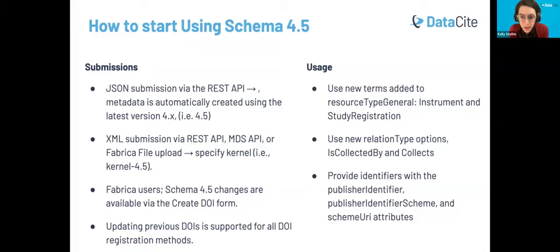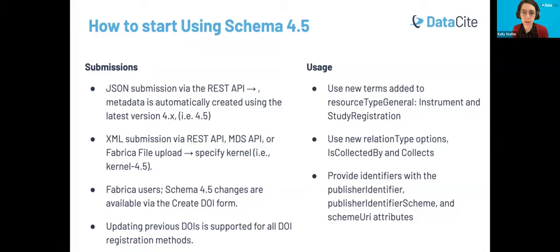For items in the schema that only accept preset values — resource type general, et cetera — yes, we do have the list of these preset values available, and I'll drop a link in the Q&A. In the docs, there's an appendices section that has the controlled list values for those. That includes resource type general, relation type, and others, so you can check that out in the new schema documentation site.